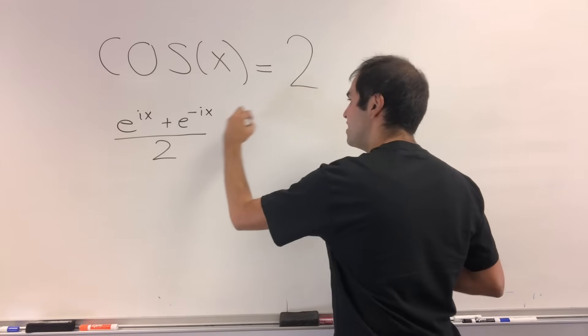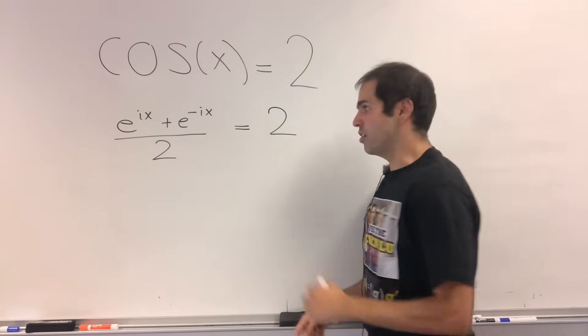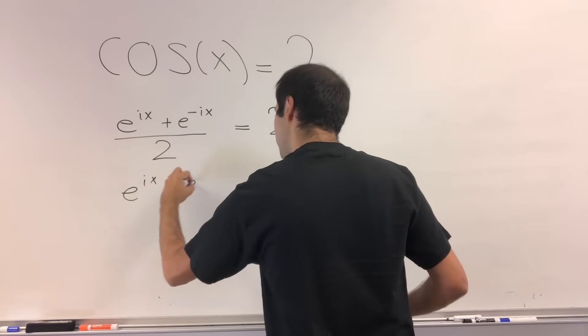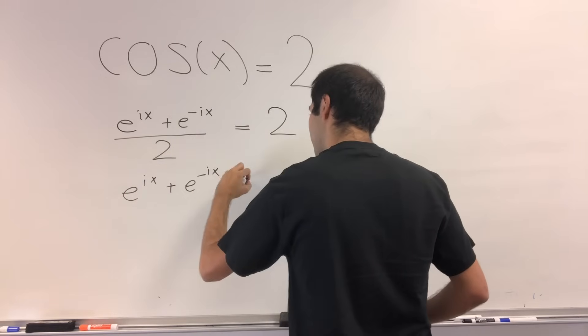And you set this equal to 2, and then let's cross multiply to get e to the ix plus e to the minus ix equals 4.